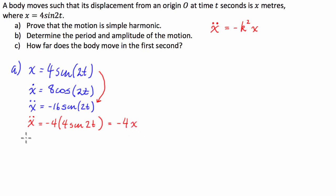So, we can see that, yes, in fact, x double dot does equal negative a constant, which is going to be 2 squared, times the displacement equation. Hence, the object's motion is simple harmonic motion. Cool. Let's get on to part B.